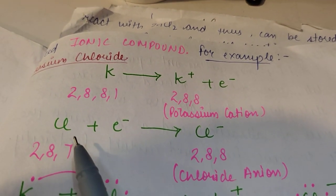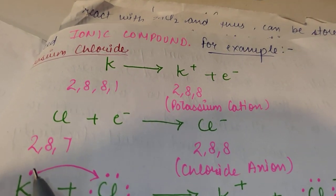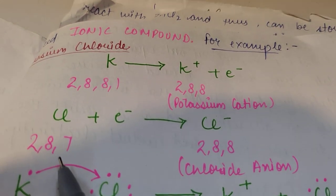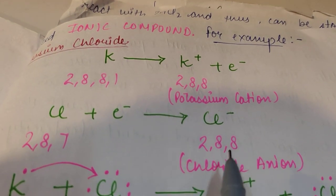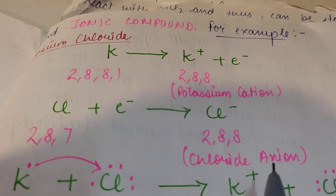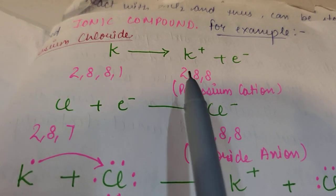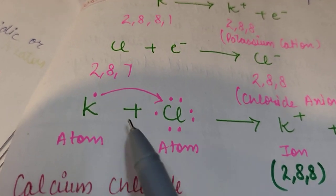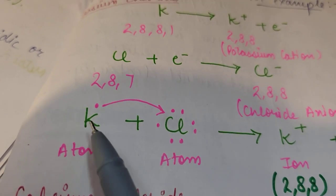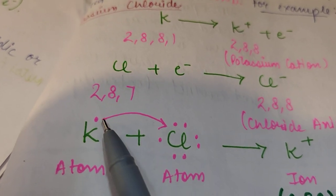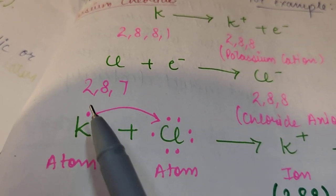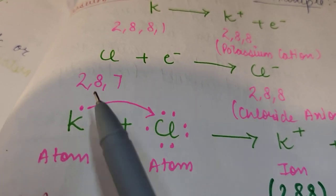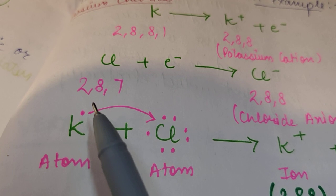Chlorine accepts one electron — it has one electron deficient compared to the noble gas configuration, so it takes one electron, completes its electronic configuration, and forms an anion. Now we have a potassium cation and a chloride anion. Diagrammatically, potassium has one extra electron in its valence shell, and we draw just the valence electrons — these are known as Lewis dot structures.